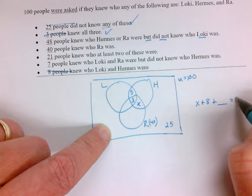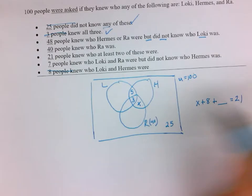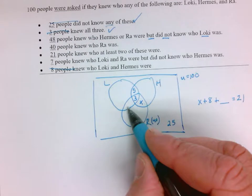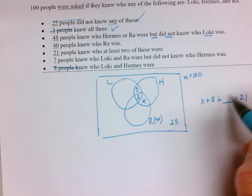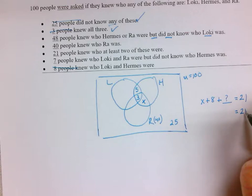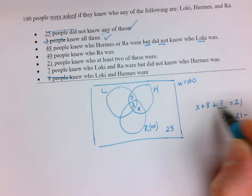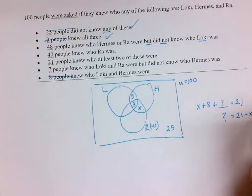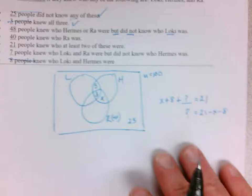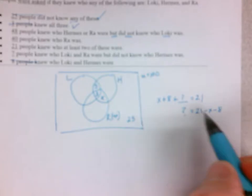So this spot right here, which we can call question mark, equals 21 minus X minus 8. In other words, that question mark is 13 minus X.